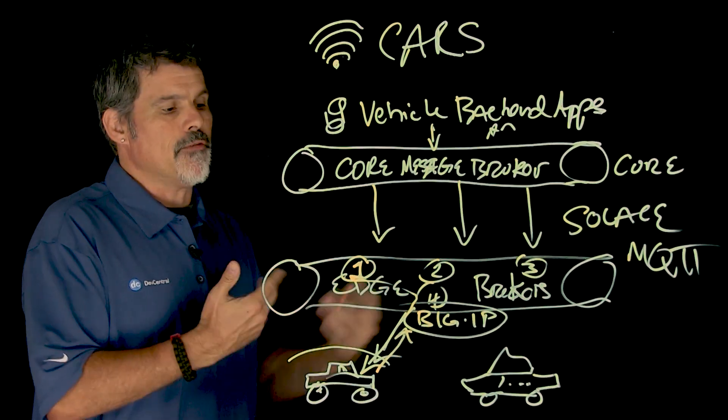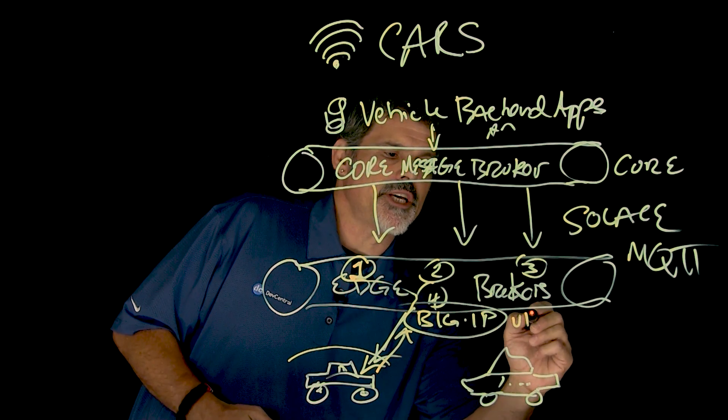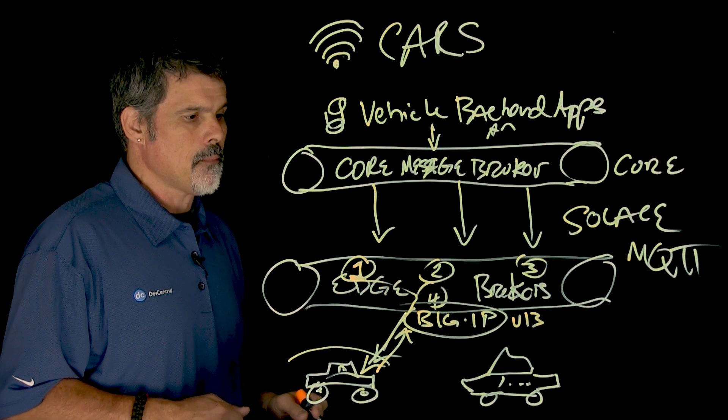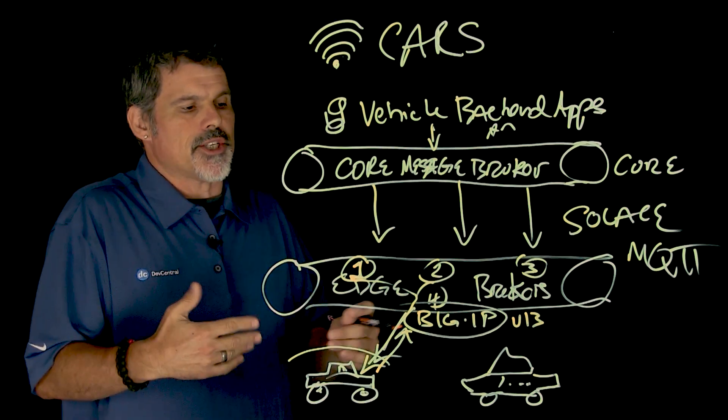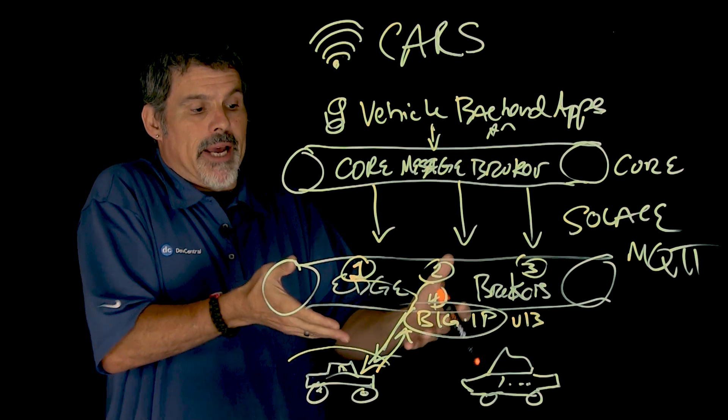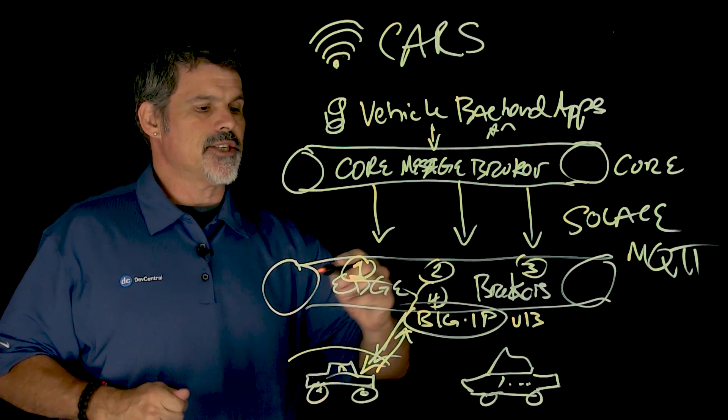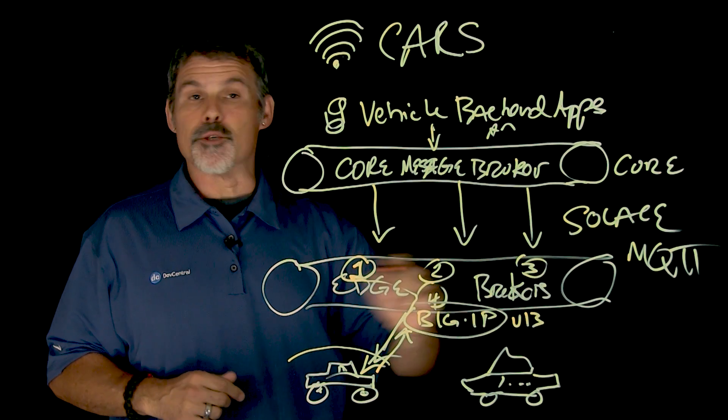So, the iRules, so first, this is version 13 of big IP, which supports MQTT protocol. And so, the first thing we'll do is just some basic security. Big IP is a full proxy architecture, so kind of protecting this set of edge brokers.